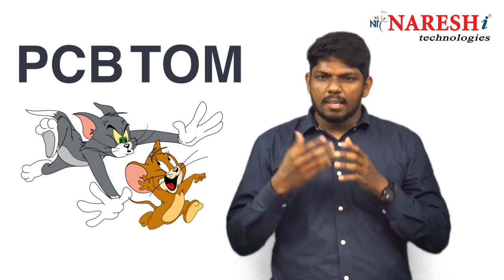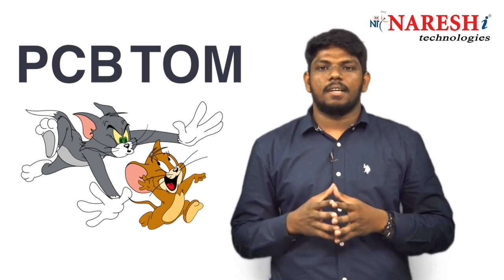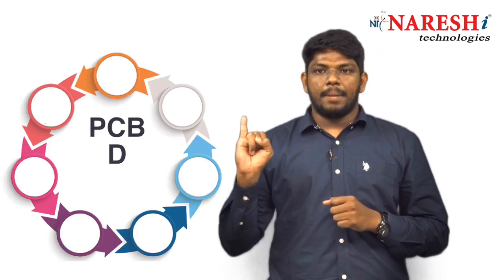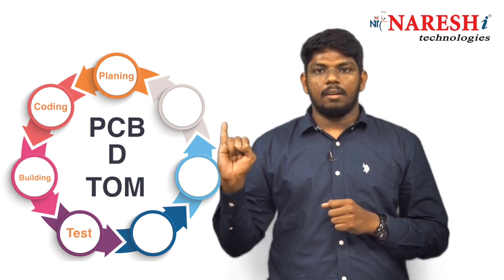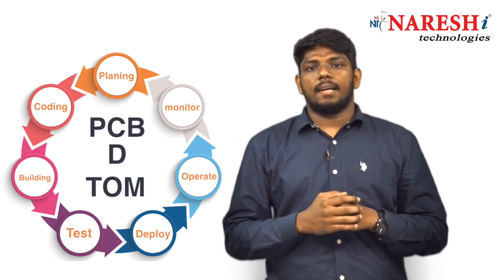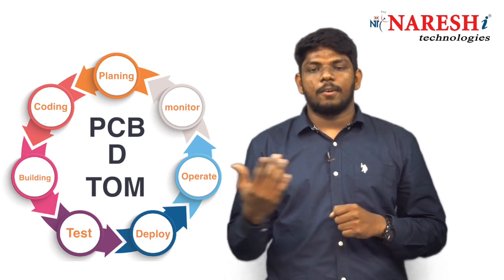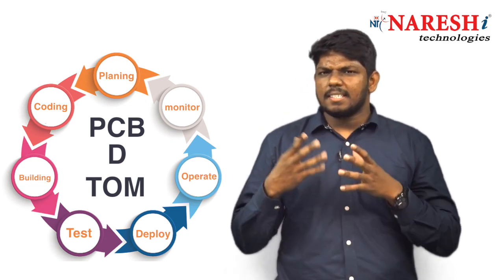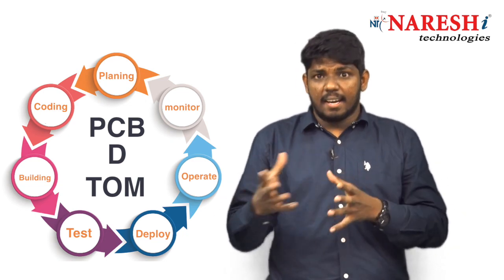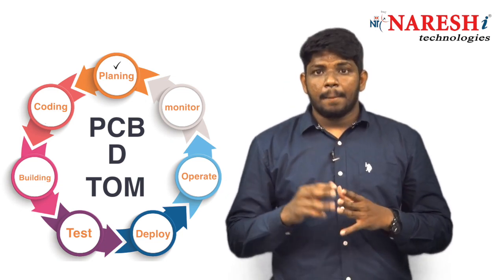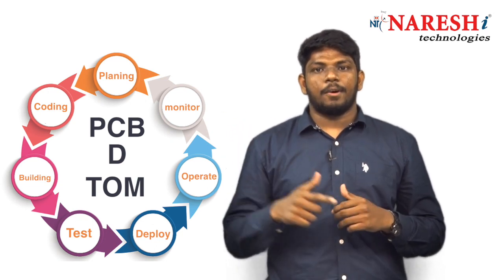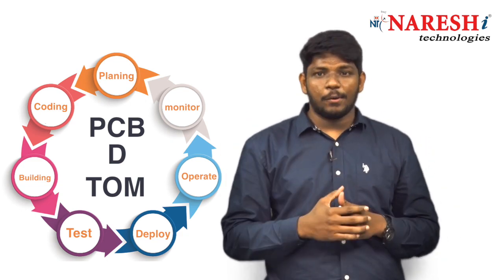You might wonder what PCB and TOM have to do with SDLC. Look at the screen — P for plan, C for code, B for build, T for test, D for deploy, O for operation, and M for monitor. PCB TOM gives you all seven stages. Now I think it is clear for you — that is how you are going to remember it.